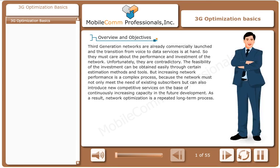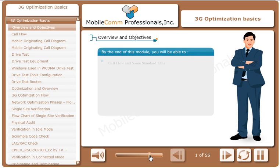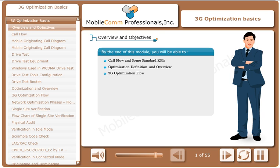Third generation networks are already commercially launched and the transition from voice to data services is at hand. They must get development as a process. Topics covered include call flow and some standard KPIs, optimization definition and overview, and 3G optimization flow.